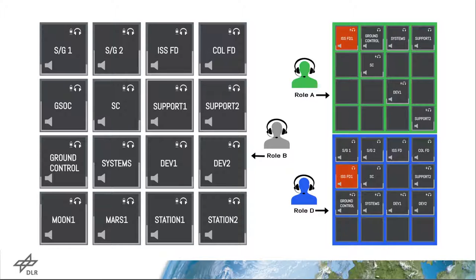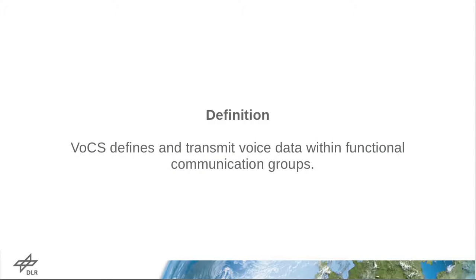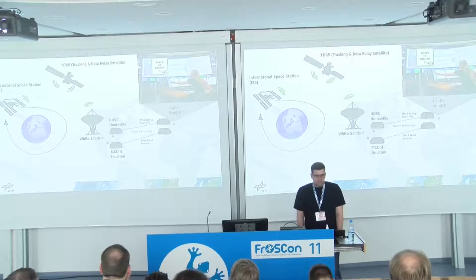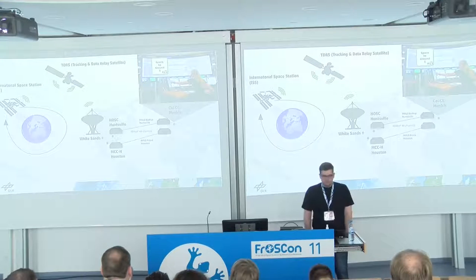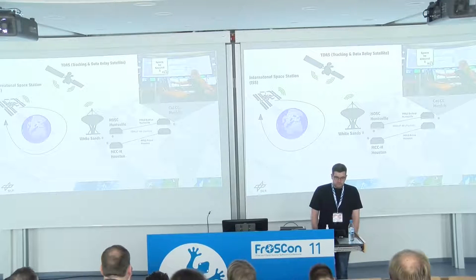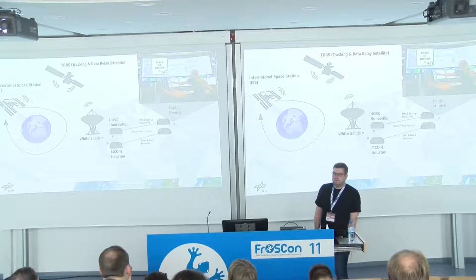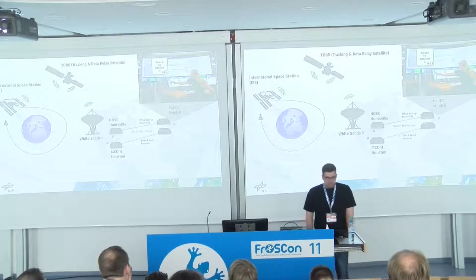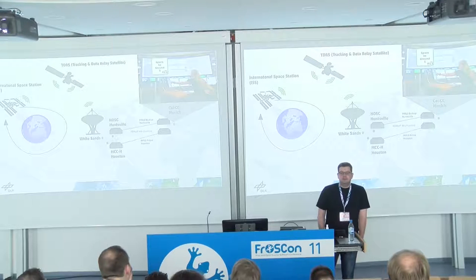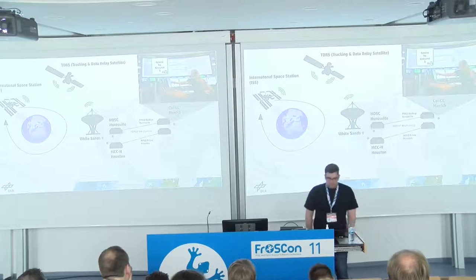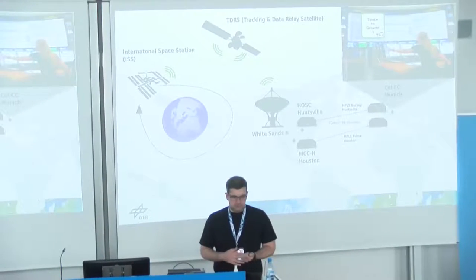When we talk about a voice communication system in a space mission context, VOX defines and transmits voice data within functional communication groups. The transmission to the space station works as follows: an operator in Munich selects the space-to-ground loop to talk, which is transmitted to Huntsville or Houston, then to White Sands for the uplink, then to a geostationary satellite, and from there to the space station. This means there is significant delay in the communication because of the very long path.